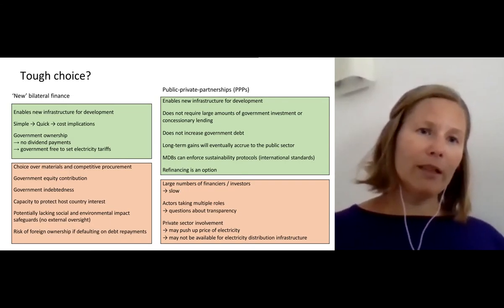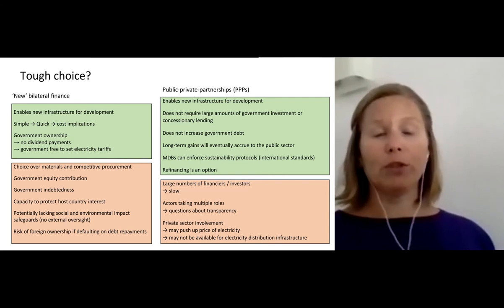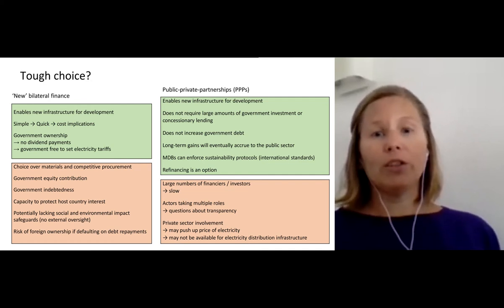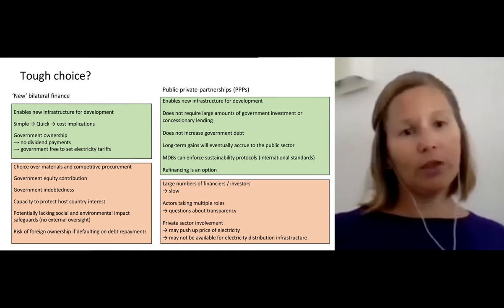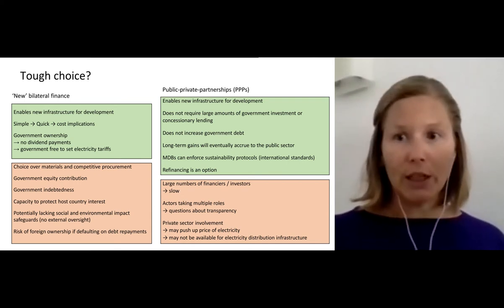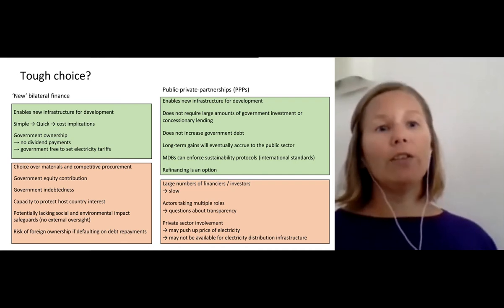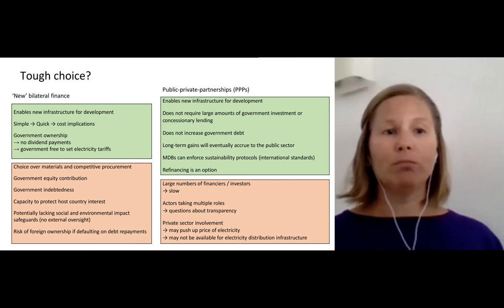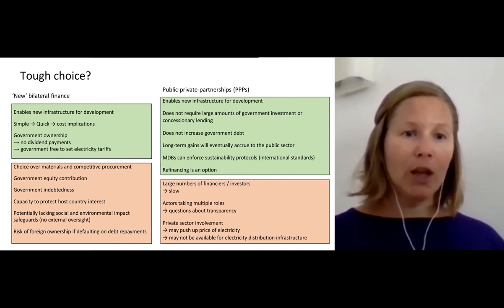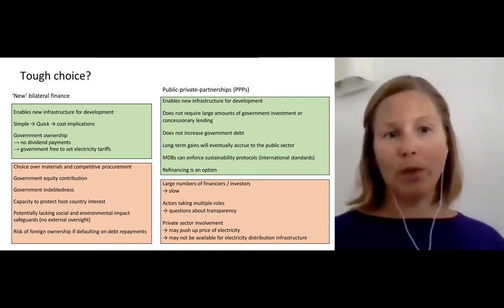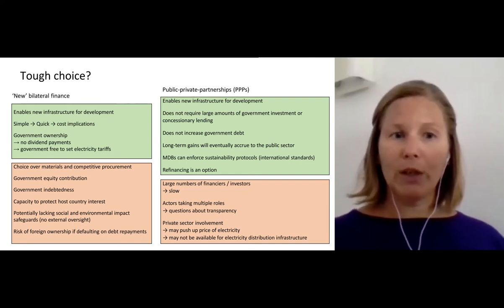When low-income countries figure out how to develop new energy generation infrastructure, these are essentially the two options available. Public sector finance is increasingly unavailable, especially to cover a large proportion of project costs. The new bilateral finance model is simple, and being simple makes it quick — and being quick tends to mean lower cost. The project is in government ownership from the very start, and there are no dividend payments to shareholders because there is no special purpose company.